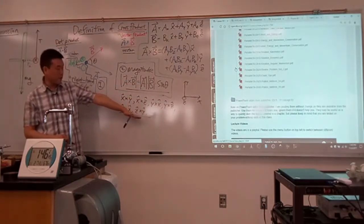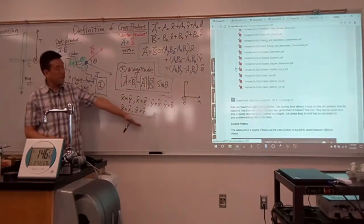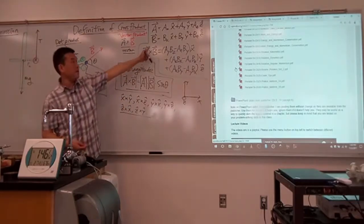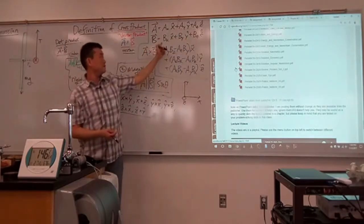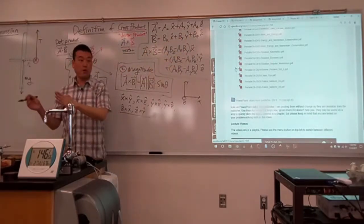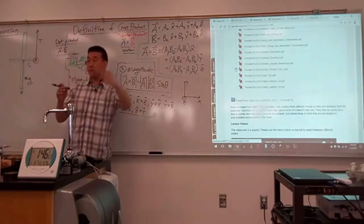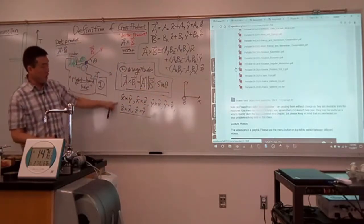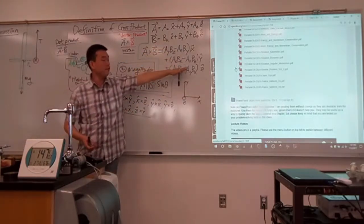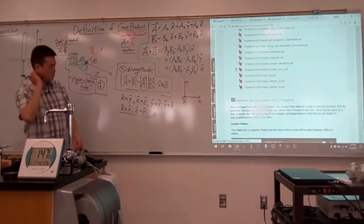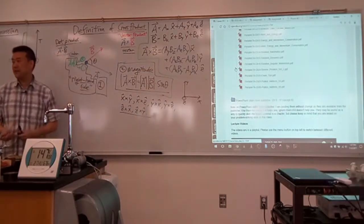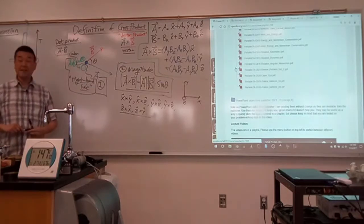With this in mind, try working all those combinations out. Once you have that, you can actually do the full cross product: plug in vector A and vector B, distribute the product, and using your knowledge of the unit vector combinations, you'll get all the components. That's the part I have to skip today because of time.